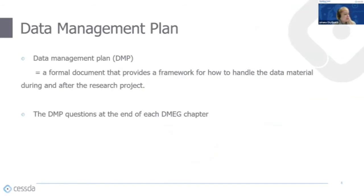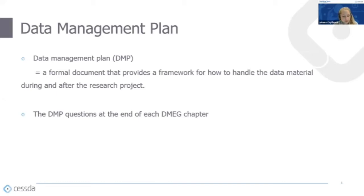Before I speak about the two chapters, I want to stress one thing called the data management plan. Throughout the whole DMAG, in every chapter, you find information about the data management plan. We keep suggesting to researchers that they should use a data management plan because it's very useful — we can say it's necessary for researchers and others who work with social scientific data. It's absolutely necessary to have your data management under control, and the data management plan really helps with that.